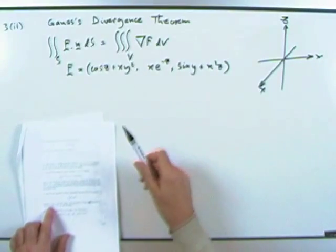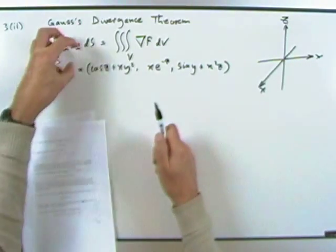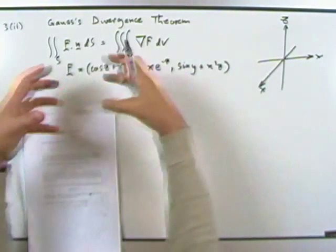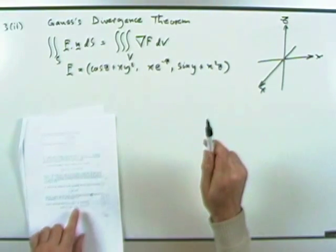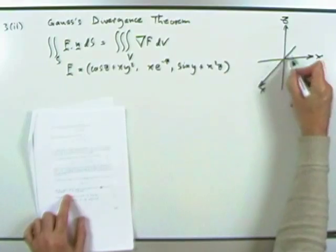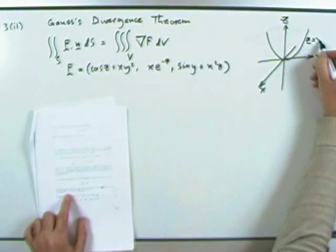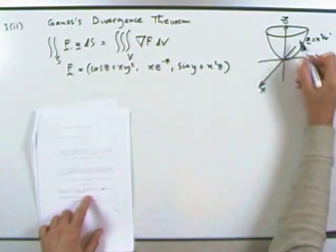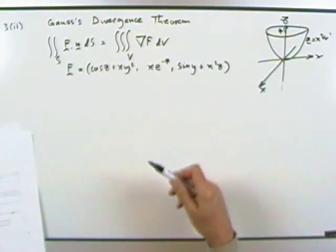The actual question says: if this is the vector field — which is quite handy because normally you have to extract the vector field from the scalar product — find the surface integral where the surface is the paraboloid z = x² + y², which is lots of circles getting bigger in the z direction forming a bowl shape, topped by the plane z = 4 as a flat lid.